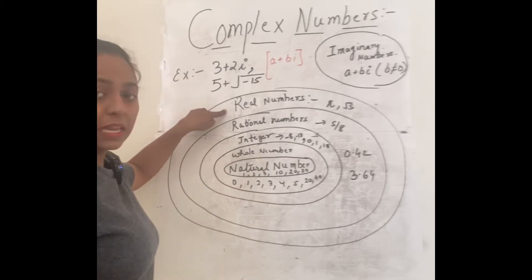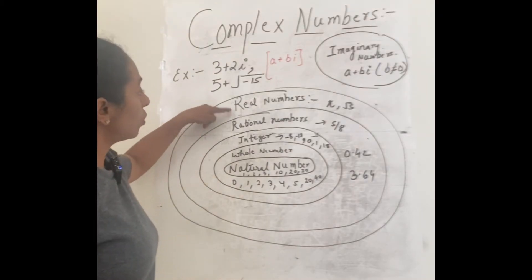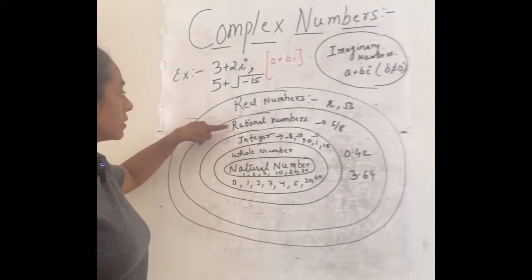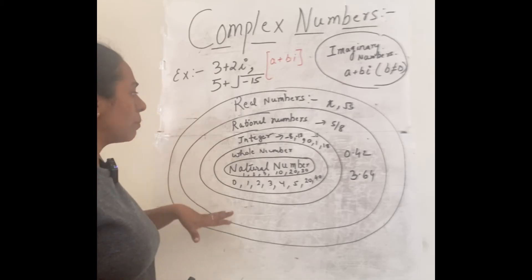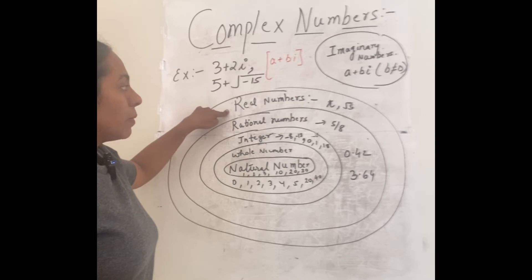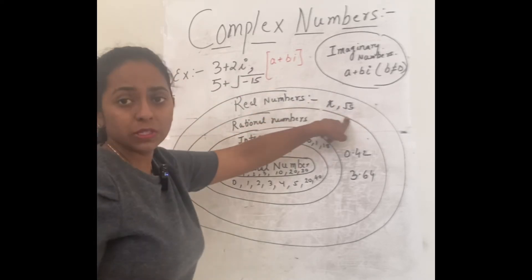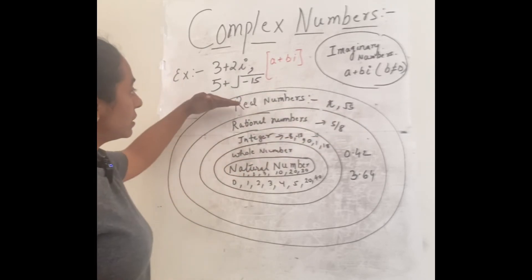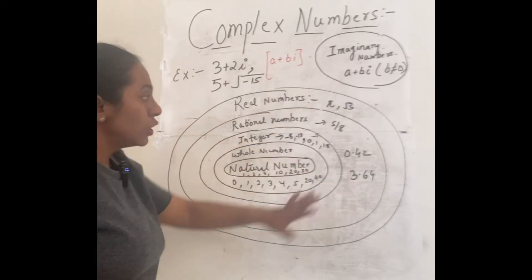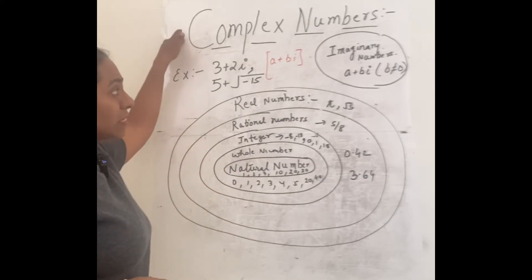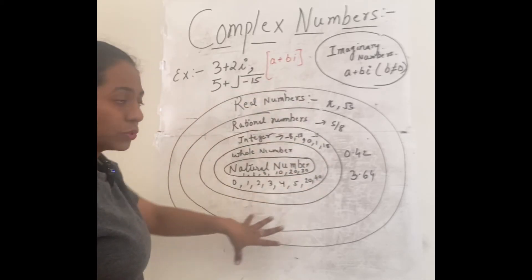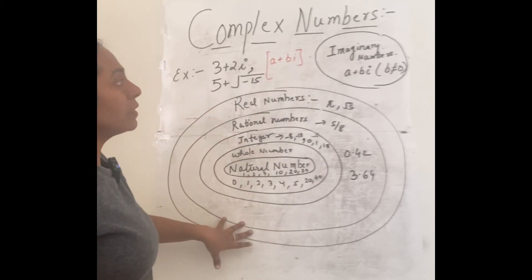Now, what is a real number? Real numbers include all the rational numbers — all fractions, decimal numbers, negative numbers, positive numbers, zeros — everything is included in real numbers. It also includes pi and root numbers. This is the real part, and in complex numbers you have this real part plus an imaginary part.